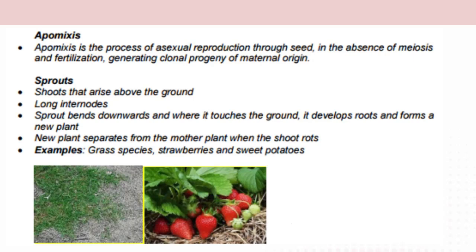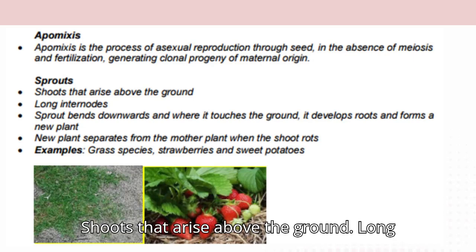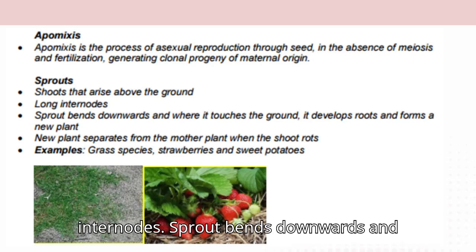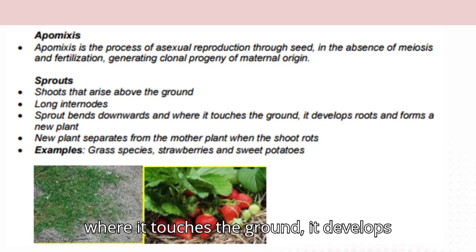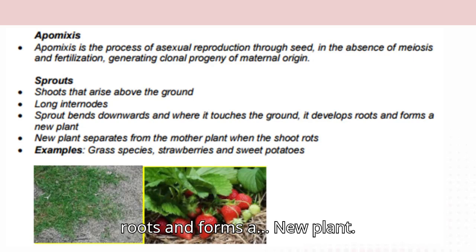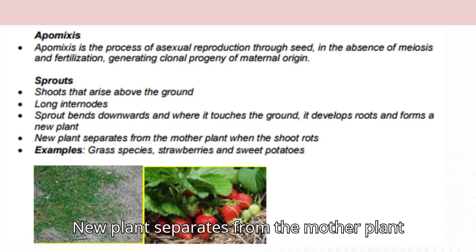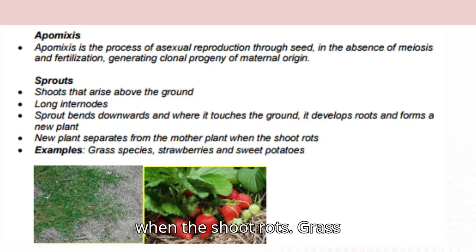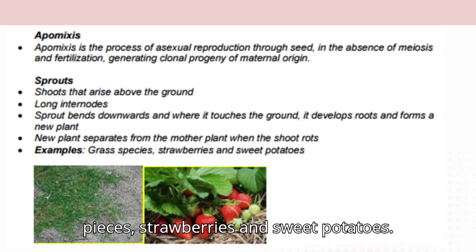Sprouts: shoots that arise above the ground with long internodes. The sprout bends downwards and where it touches the ground it develops roots and forms a new plant. The new plant separates from the mother plant when the shoot rots. Examples: grass species, strawberries, and sweet potatoes.